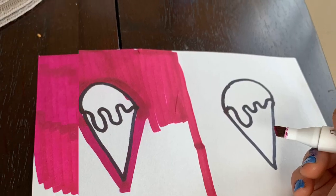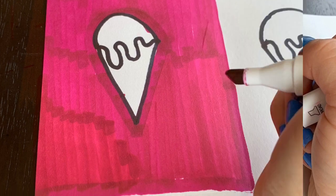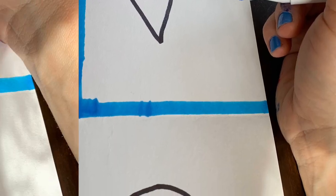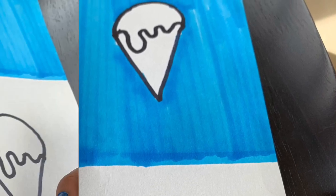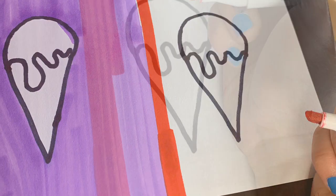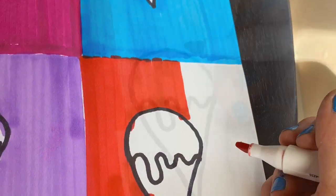Start with one square and color in the negative space, the background, of each square. Choose another color and color in the negative space. Then choose another color and color in the background of that. And lastly, your fourth one.